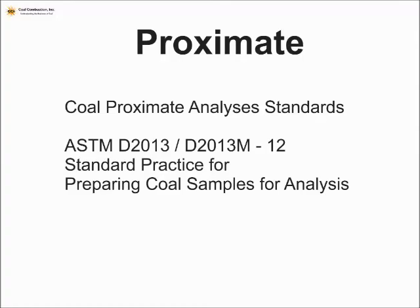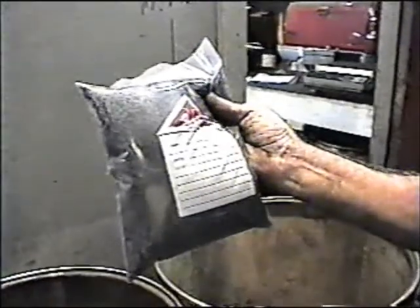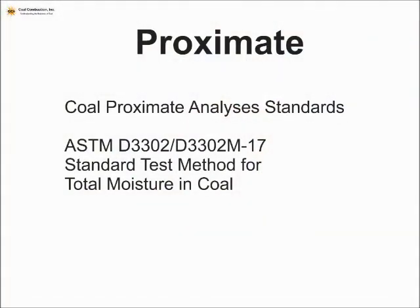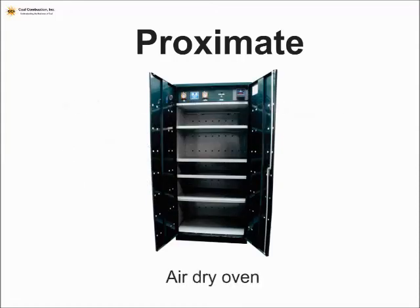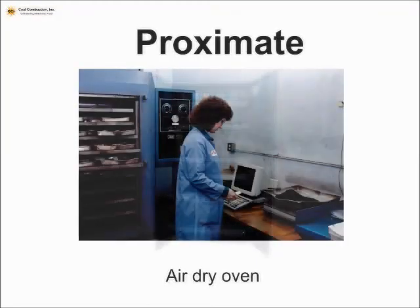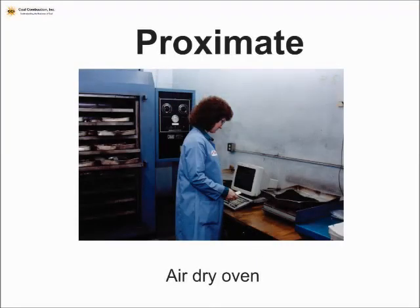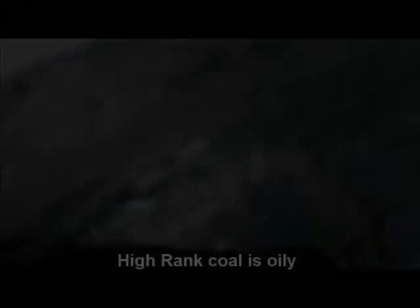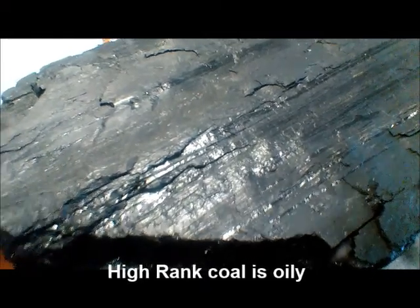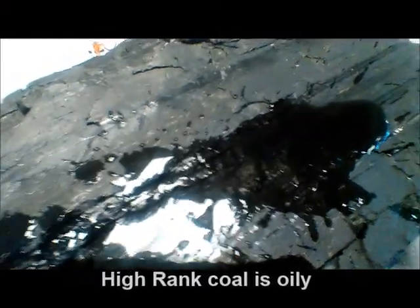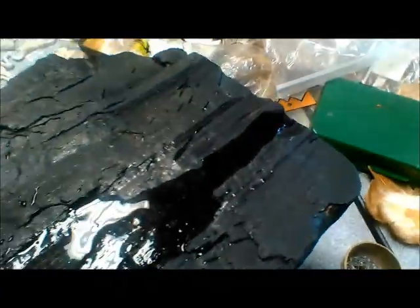Once the coal sample has been collected, we've got to make an actual laboratory sample. When we go through that process, we actually have to air dry the coal — it's common to use an air dry oven, though at some point we used to just spread it out in the lab to dry it. We weigh the coal, dry it, and we're basically looking at the surface moisture. With bituminous coals, that surface moisture is clearly on the surface — the coal is oily — so we get a nice clean separation.